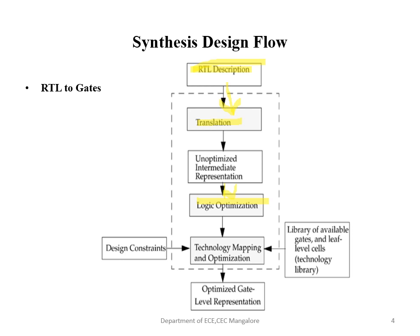After logic optimization, the process moves to technology mapping and optimization. Until this point, the design is independent of a specific target technology. At this point, the library is made available and an implementation is created using cells provided by the technology library. The design is then mapped to the desired target library technology.